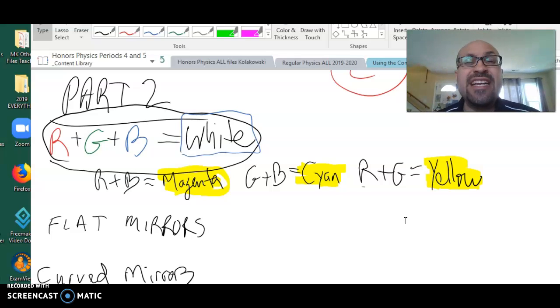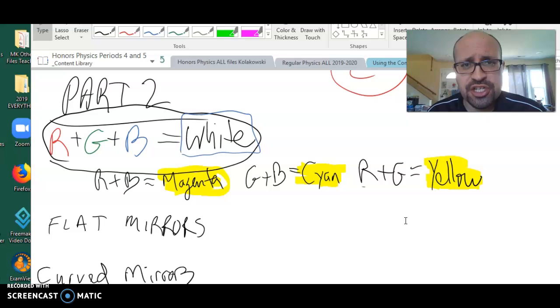The first thing I want to cover is the difference between color addition and color subtraction. Color addition is, in physics, perhaps the more fundamental of the two types of analysis for color. We first have to recognize that in the electromagnetic spectrum, ROYGBIV, there are three fundamental primary colors of addition. Those three primary colors of addition are red, green, and blue.